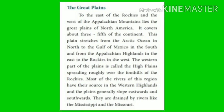The next physiography is the Great Plains. To the east of the Rockies and the west of the Appalachian Mountains lies the Great Plains of North America. It covers about three-fifths of the continent. This plain stretches from the Arctic Ocean in the north to the Gulf of Mexico in the south, and from the Appalachian Highlands in the east to the Rockies in the west. The western part of the plains is called the high plains, spreading roughly over the foothills of the Rockies. Most of the rivers of this region have their source in the western highlands, and the plains generally slope eastwards and southwards. They are drained by rivers like the Mississippi and the Missouri.